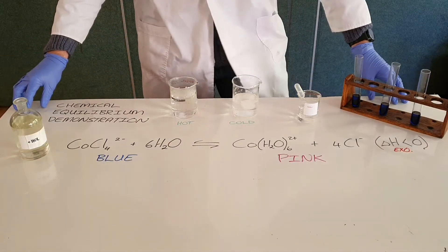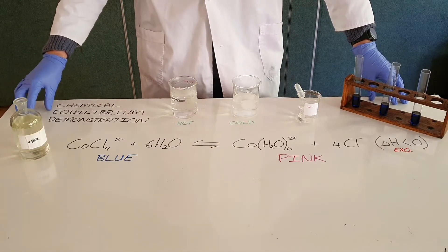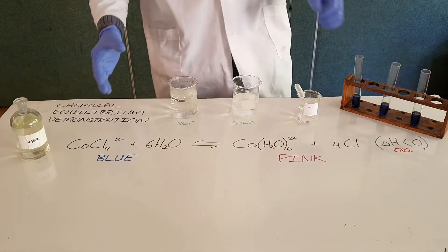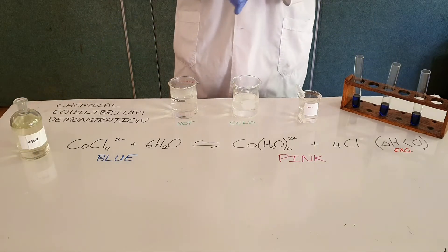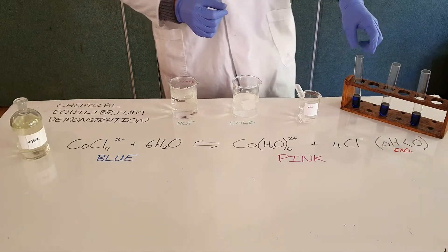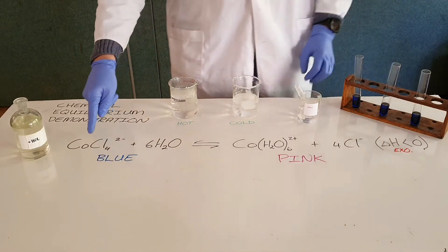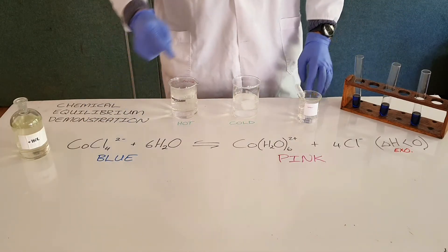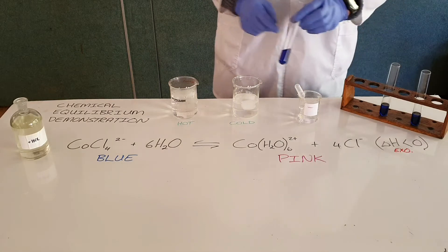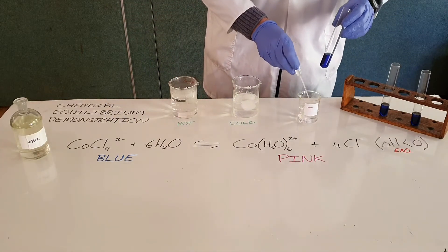We can demonstrate the way in which Le Chatelier's principle governs chemical equilibrium by making changes to a reaction and seeing how that solution changes accordingly. The reaction we're working with here is cobalt chloride reacting with water. Here we have cobalt chloride — you can see that it is this dark blue-purple color.